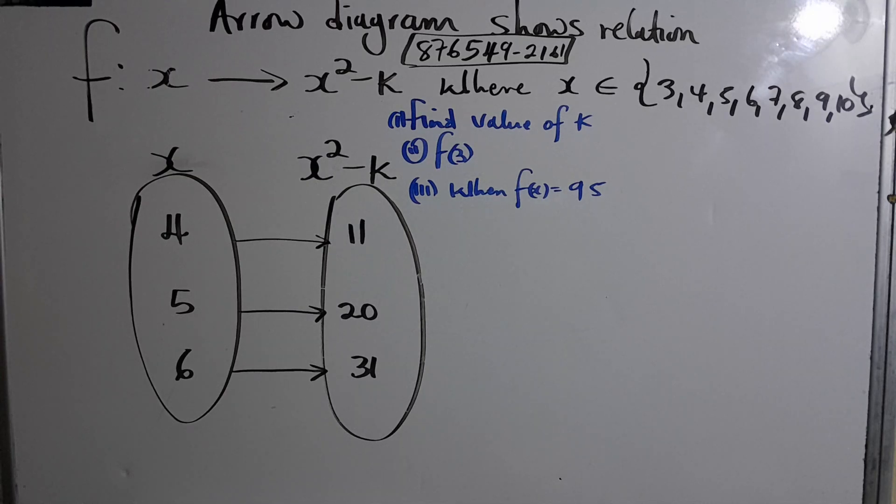Welcome back to Lennox Bennett channel. This question was sent to me from TikTok. I've actually done this already on my channel, but I'm going to do it for her. The arrow diagram shows a relation f(x) = x² - k for the numbers 3 to 10. Find the value of k.